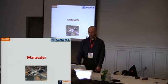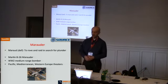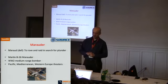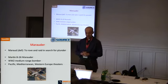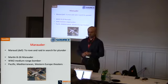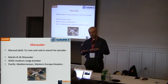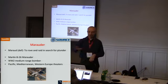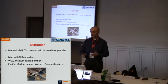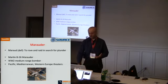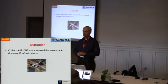In passive DNS it's persistent — you can always go back and query whatever you want. But with the stream, since it's moving forward in time, you have to know what you're looking for beforehand if you want real-time responses. The Marauder system is about roving and raiding in search of plunder. Named after the B-26 medium-range bomber from World War II, the idea is to cruise the IP and DNS space searching for new attack domains and IP infrastructures.